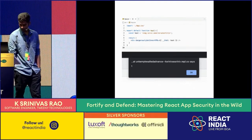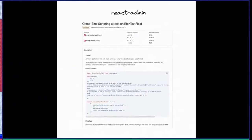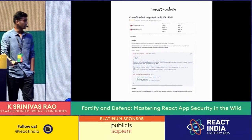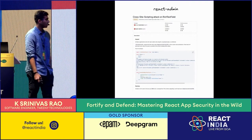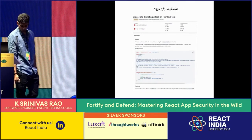Here is a real-life example: a security advisory from GitHub for a package called React Admin, which is used to build dashboard-like UIs for React apps. They had the same vulnerability — directly injecting user-provided elements into the DOM using dangerouslySetInnerHTML, making them vulnerable to cross-site scripting. Later, they released a patch using a package called DOMPurify, which sanitizes user input before injecting it. DOMPurify is built by security experts and, given a string, removes potential attack payloads and returns a clean string. If you are dealing with user inputs, make sure you use packages like DOMPurify before injecting them into the DOM.